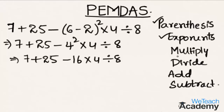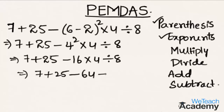The next step is to multiply. Multiplying and rewriting, we get 7 plus 25 minus 16 times 4, that is 64, divided by 8. Multiplication is finished.